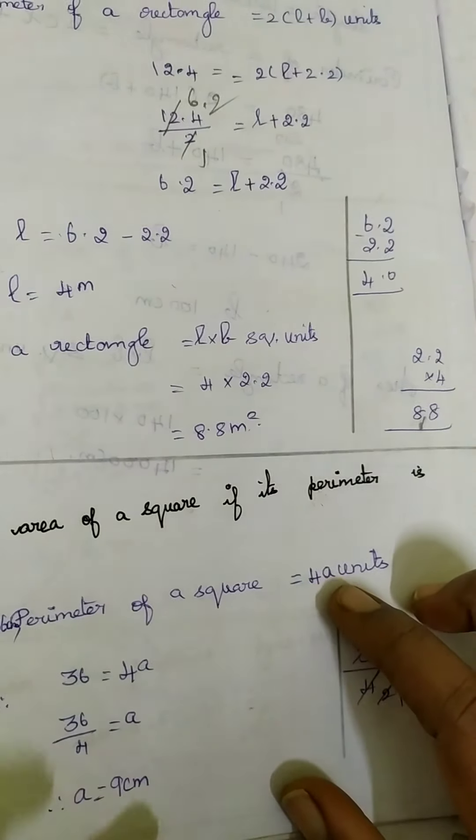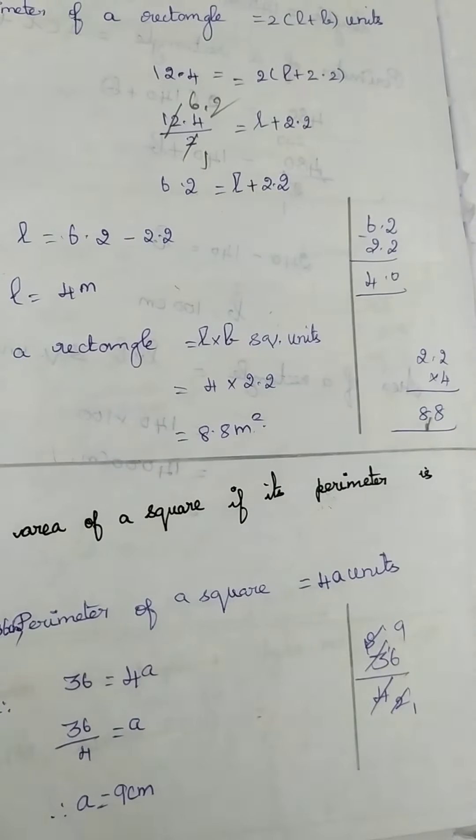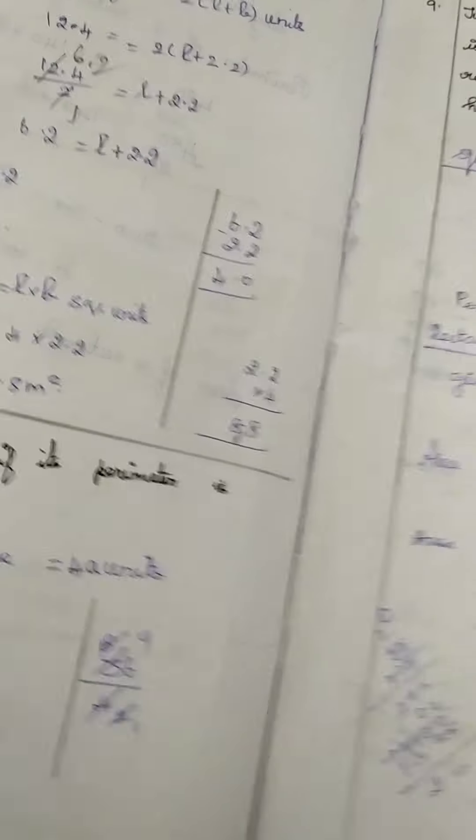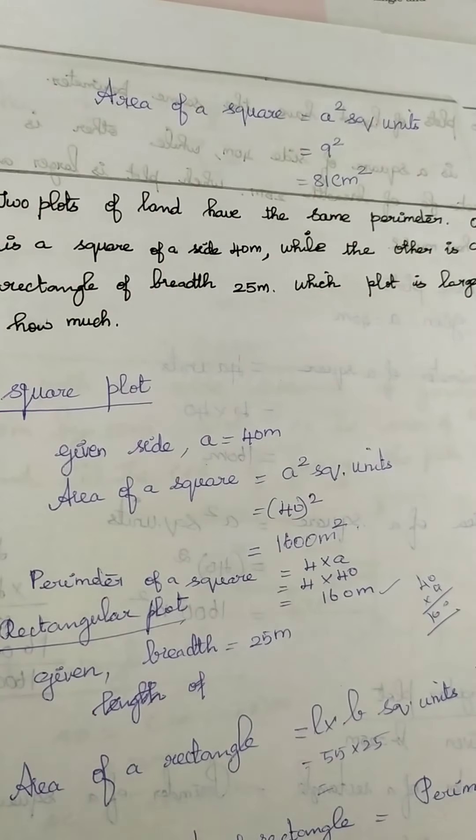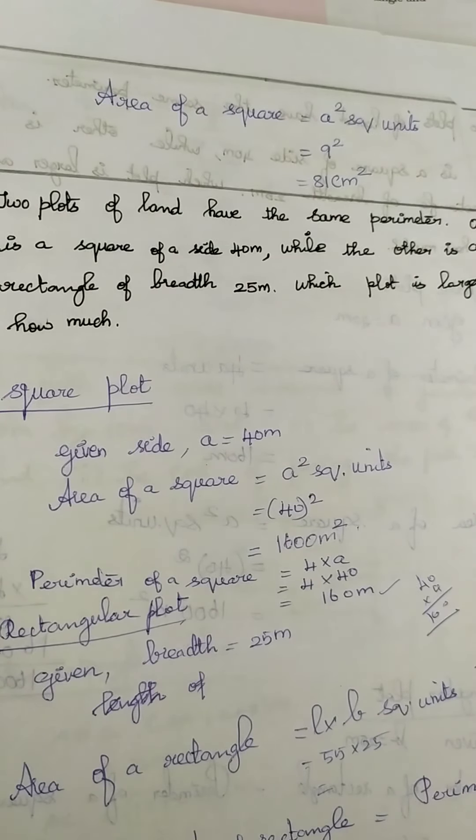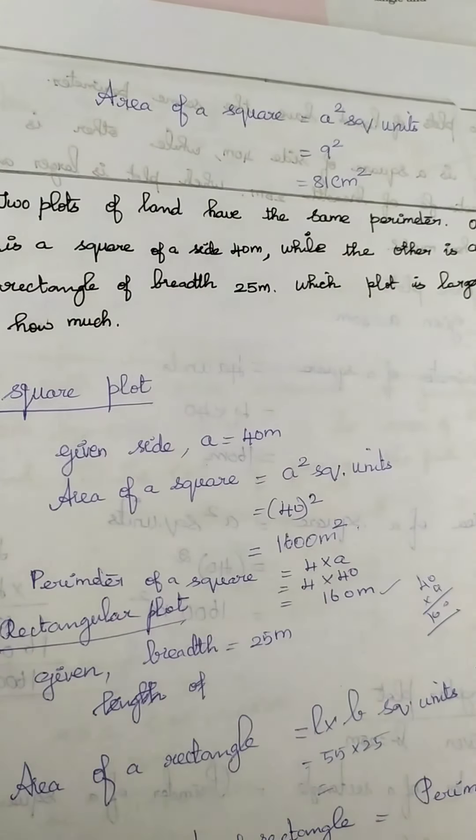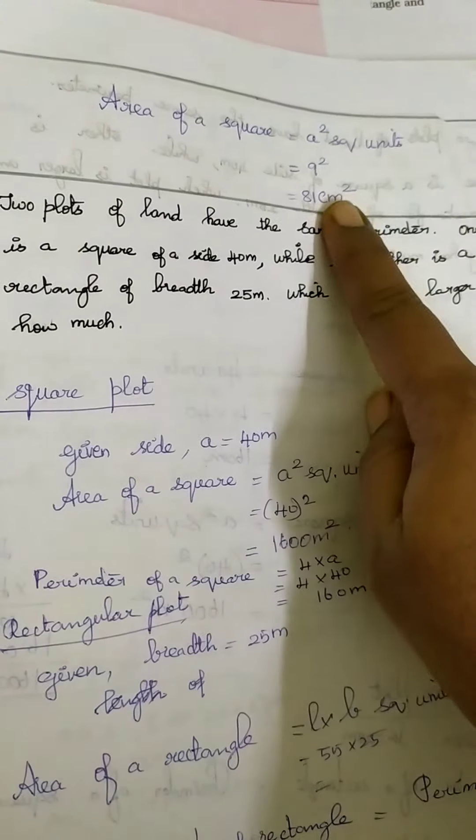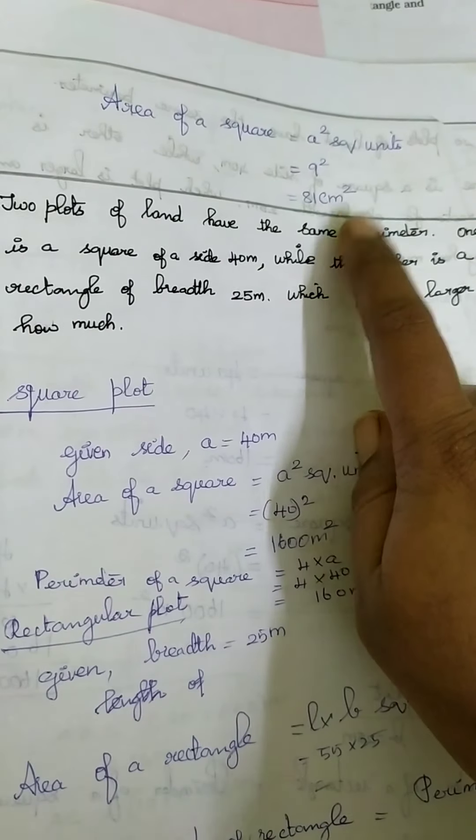With this we have found side of a square. Question is to find area of a square. So area of a square is equal to A square square unit. The value of A is 9. 9 square means multiplying 9 twice. 9 into 9. 9 nines are 81 centimeter square. So your answer is 81 centimeter square.